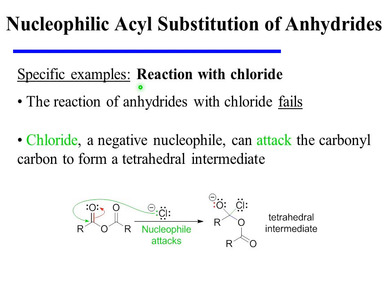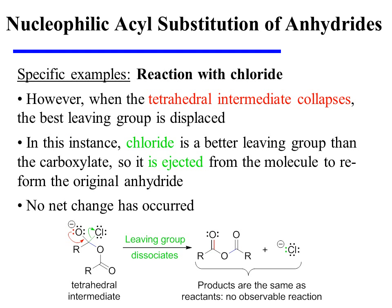While we could consider the reaction of an anhydride with chloride, it turns out that this reaction actually fails. Chloride is a negative nucleophile, and as a result, it can attack the carbonyl carbon to form a tetrahedral intermediate. However, when the tetrahedral intermediate collapses, the best-leaving group is displaced, and in this instance, chloride is a better leaving group than the carboxylate, so it is ejected from the molecule to reform the original anhydride. So there has been no net change as a result of this process.